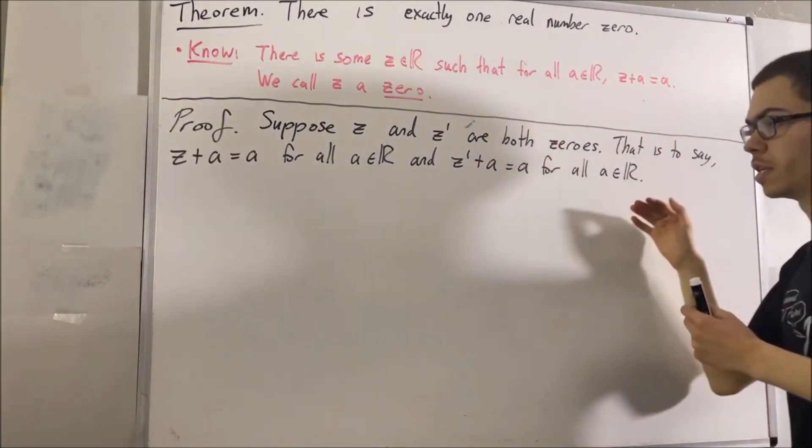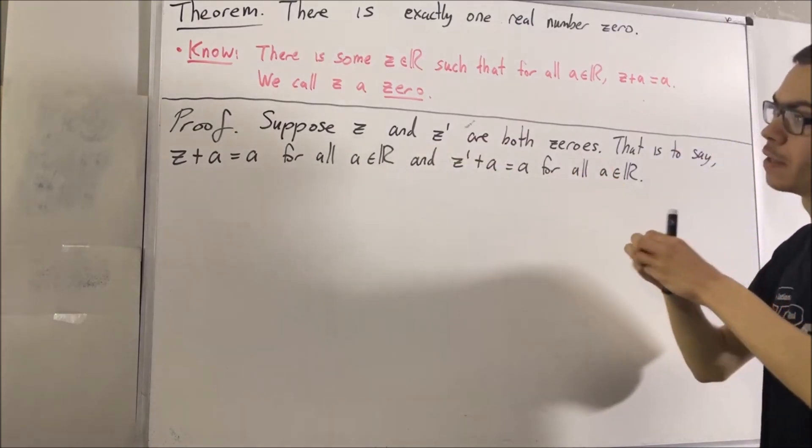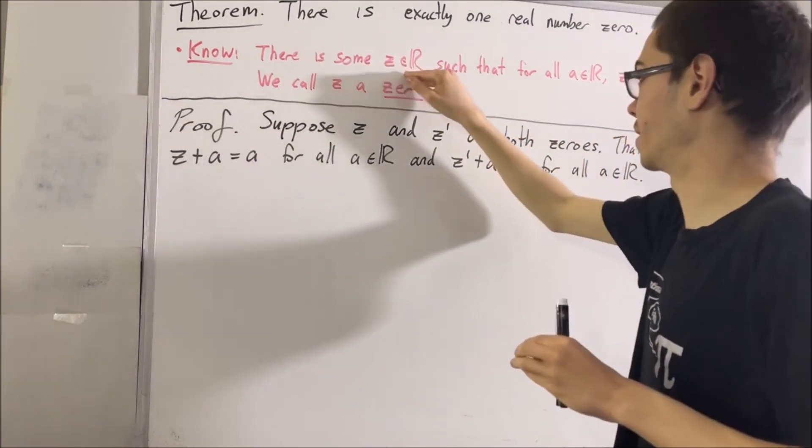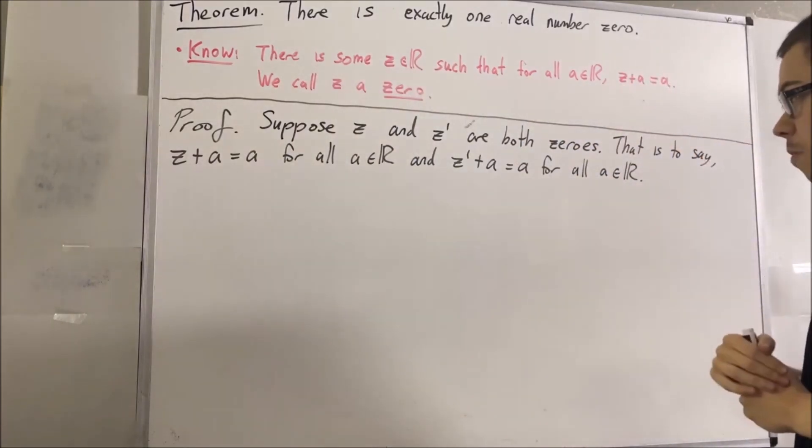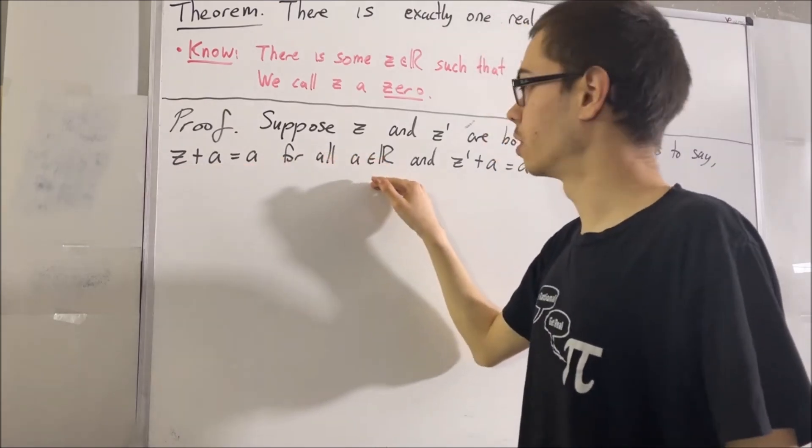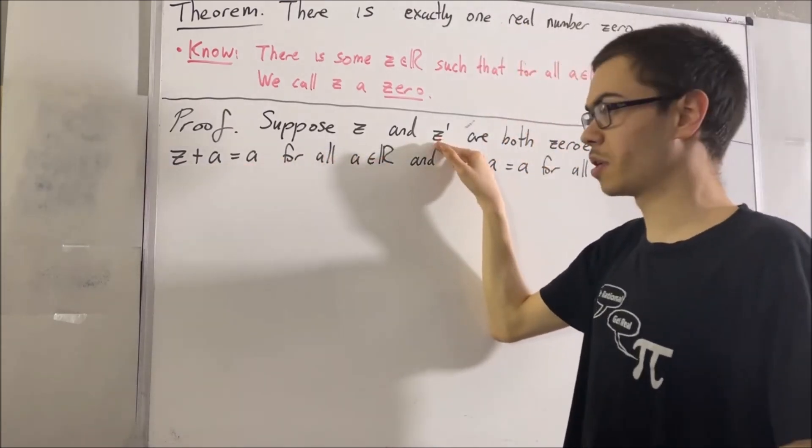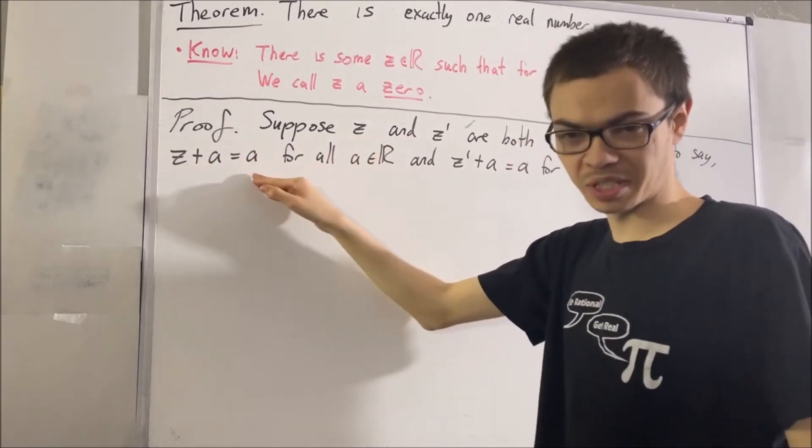Our goal is to deduce that z and z prime must be equal, and that will prove that there can only be one real number z that satisfies this condition. So we know that this equation holds for every real number. Well, since z prime is a real number, it must hold for z prime. So we have that z plus z prime is equal to z prime.